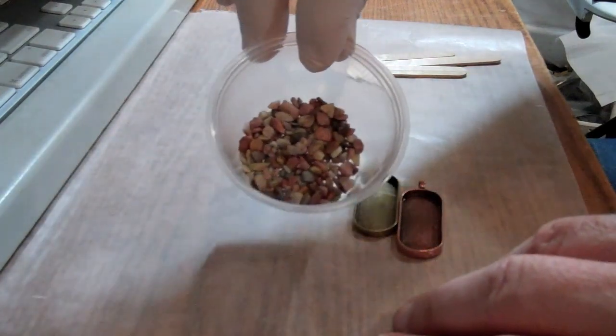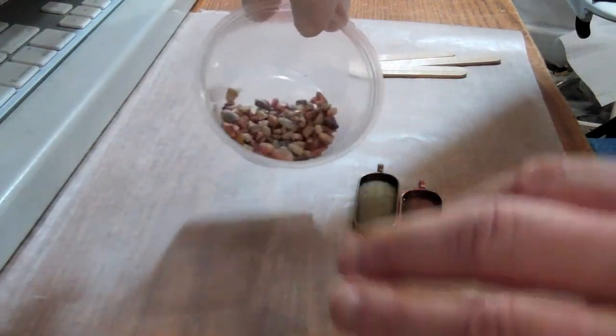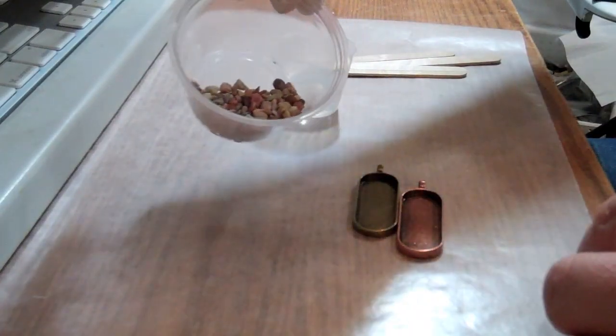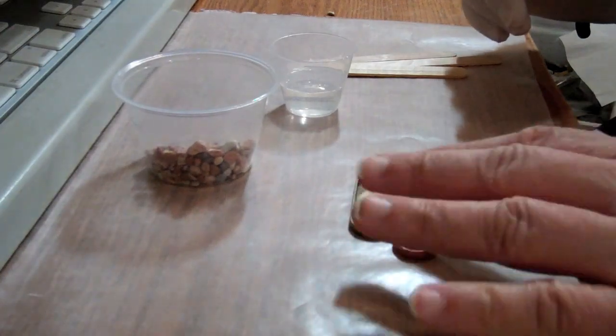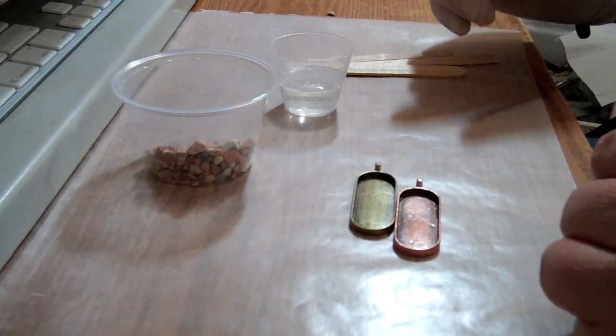We're going to take these little pebbles here, river rocks, that you can find in flowered apartments and stuff like that. They're made for putting in planters, and we're going to fill some pendants with them.